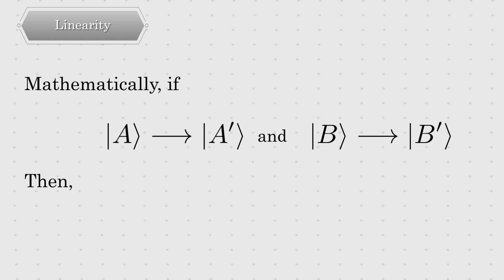Mathematically, if vector a evolves to a prime and vector b evolves to b prime, then, if the evolution is linear, the superposition of a and b evolves into a prime plus b prime. This fact that the Schrödinger equation is linear has a significant consequence in the foundation of quantum mechanics.